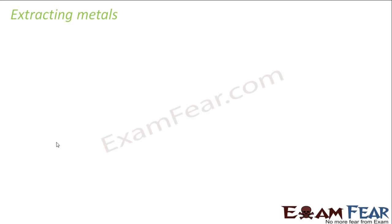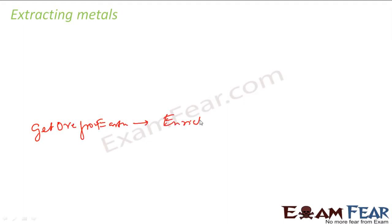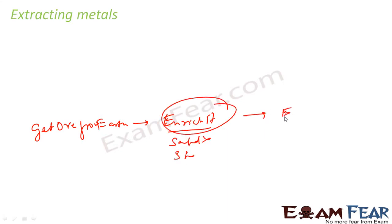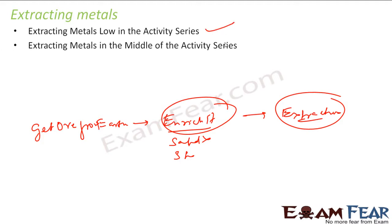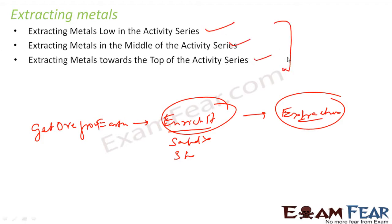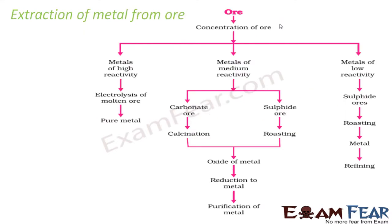So the process is like this: you get ore from the earth, then you enrich it — that is, remove sand, stone, etc. Once it is enriched, you start the extraction process. For the extraction process, it depends whether it is a metal of low activity series, medium activity series, or high activity series. For all these three, you will have different extraction processes. So we have this ore, enrichment is done first, and then we have three options: high reactive, medium reactive, low reactive.